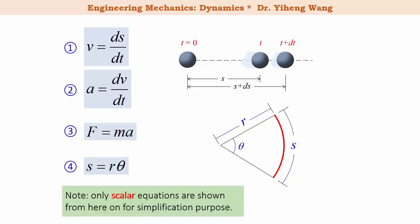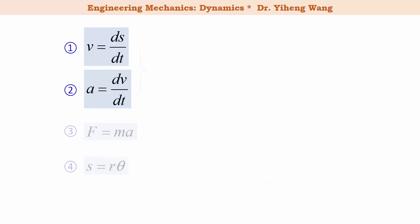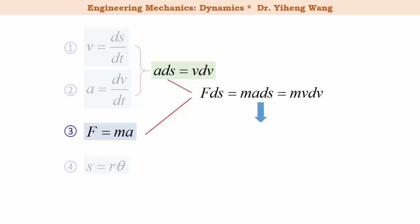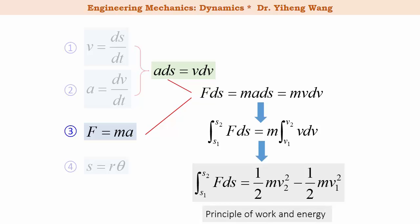The reason why I said I think these are the only four most fundamental formulas in this class is because most other formulas in this class can be derived from these four. For example, if you combine these two equations by canceling out dt, then you get the third kinematic equation. If you take this newly derived equation, combine it with Newton's second law, integrate, you will get this equation, which is the principle of work and energy.